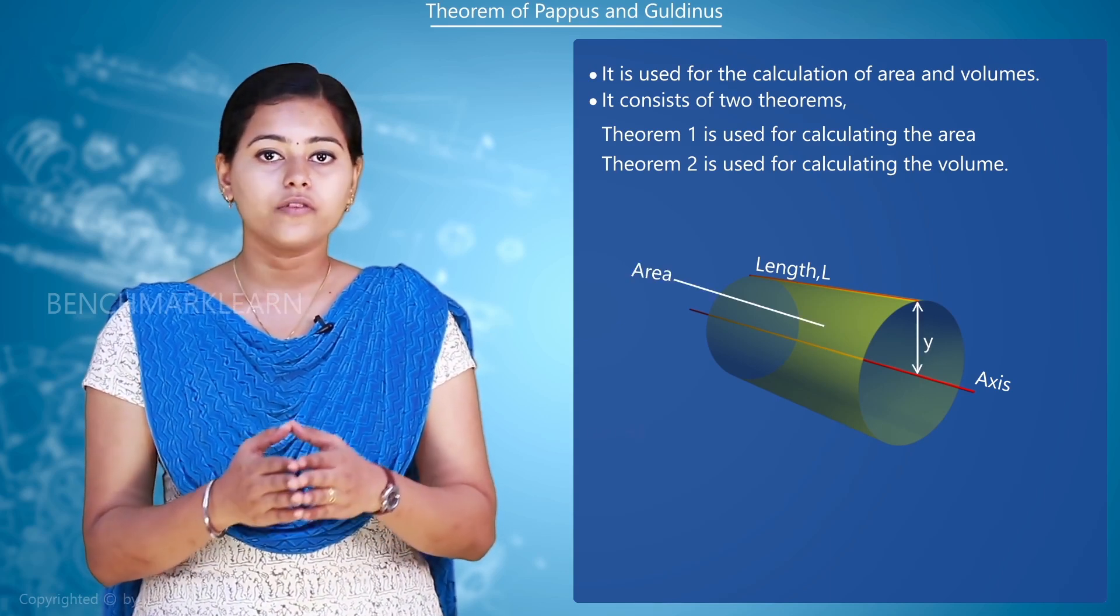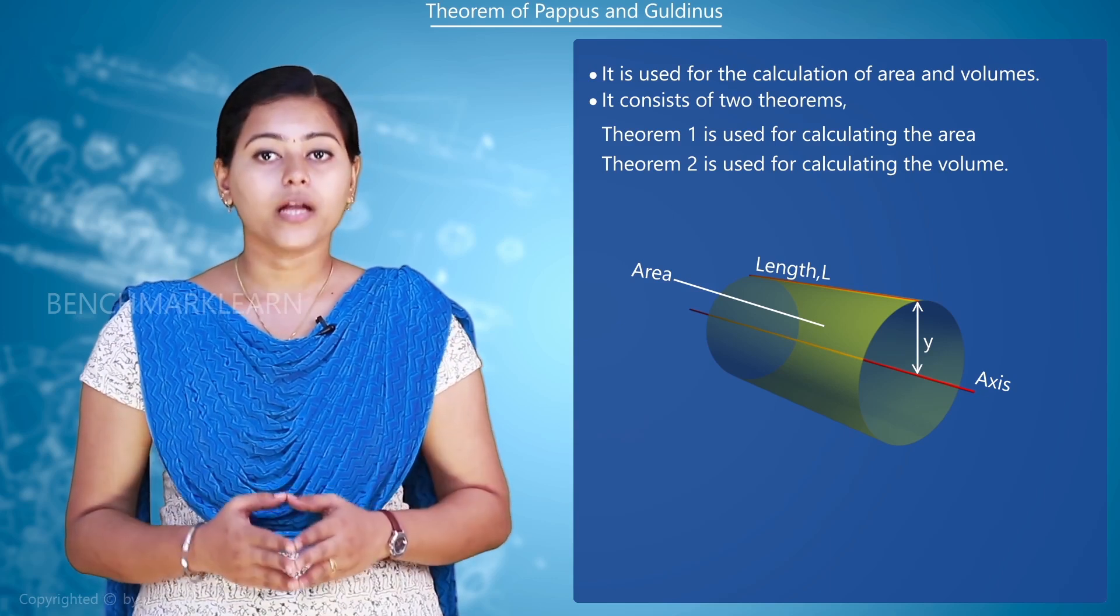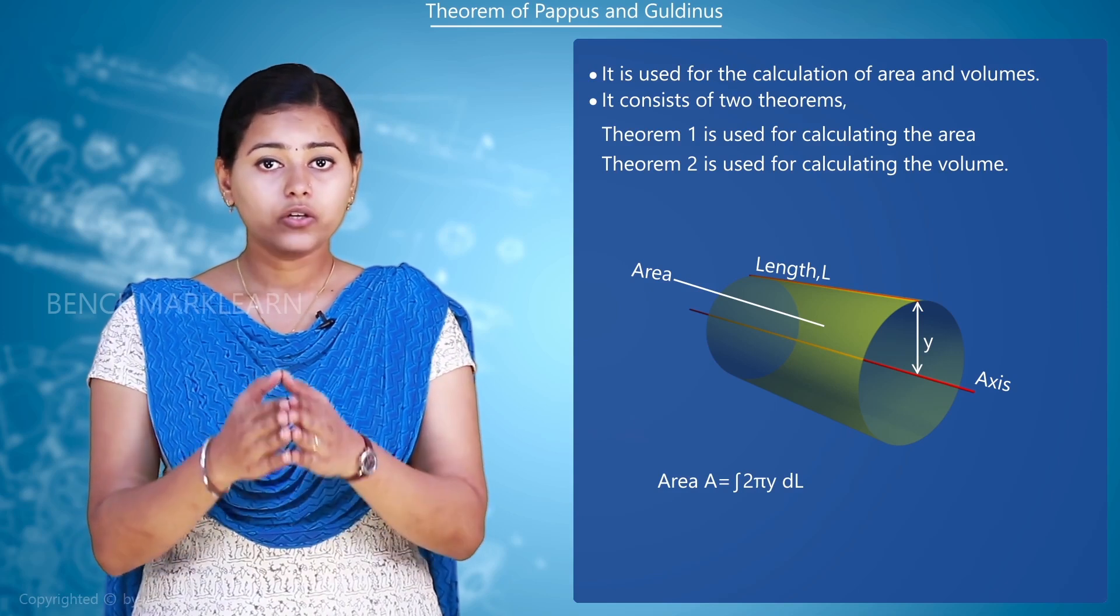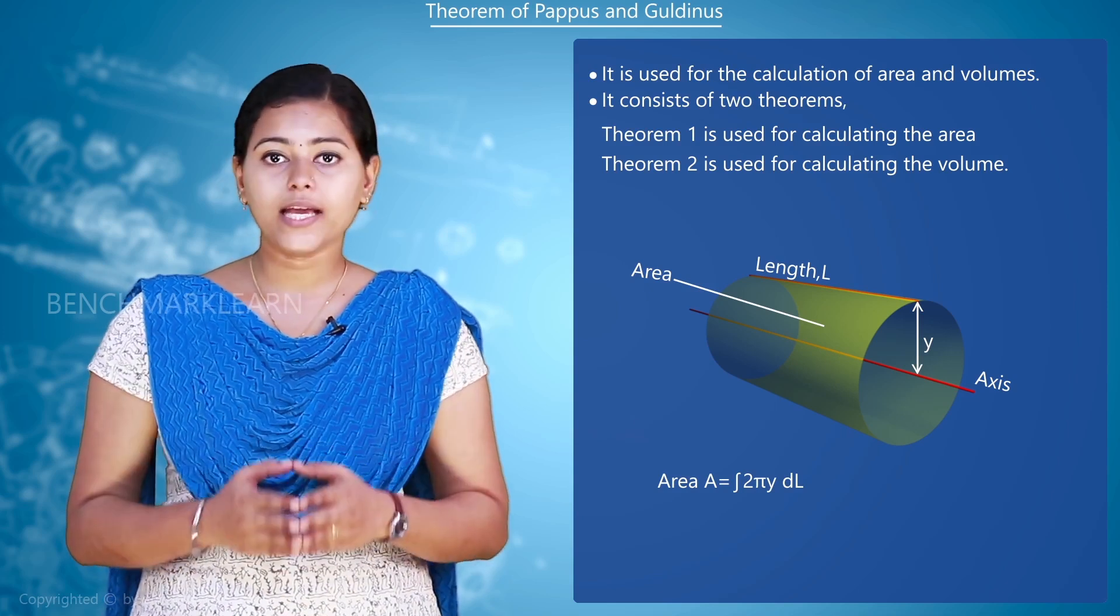In order to find the area of the surface created, we apply the equation area A is equal to integral 2 pi y into dl.